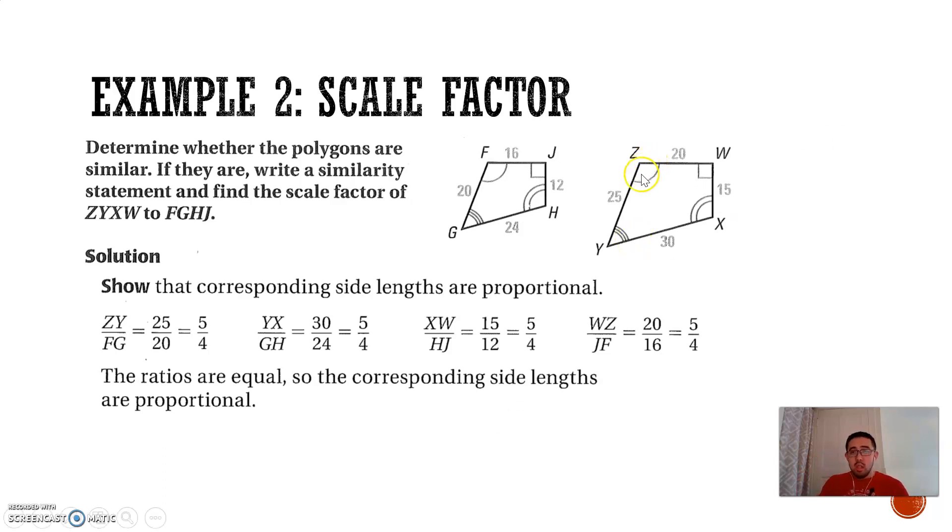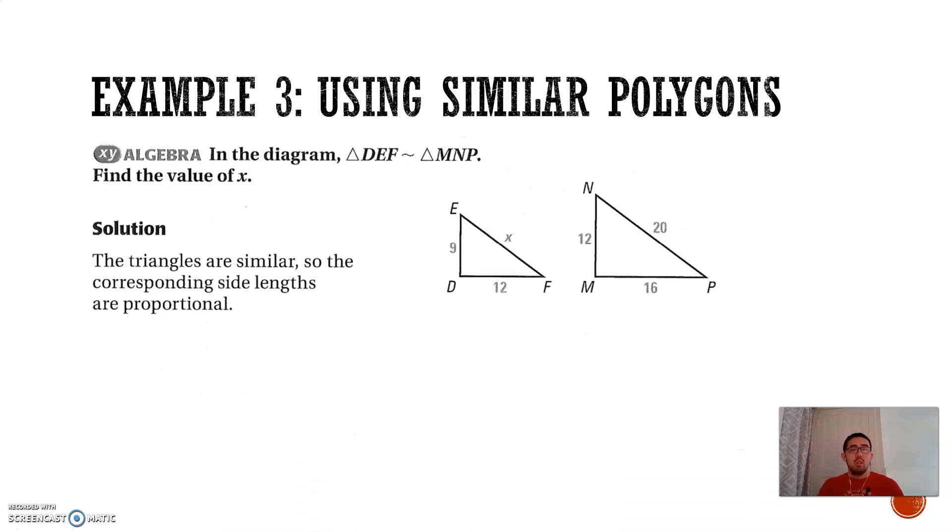This is a ratio of 5 to 4, the size of this polygon versus the size of this polygon. The ratio is 5 to 4, that's the scale factor.